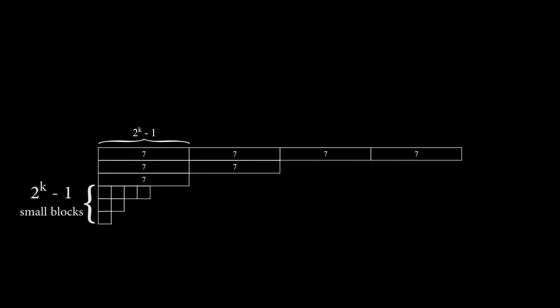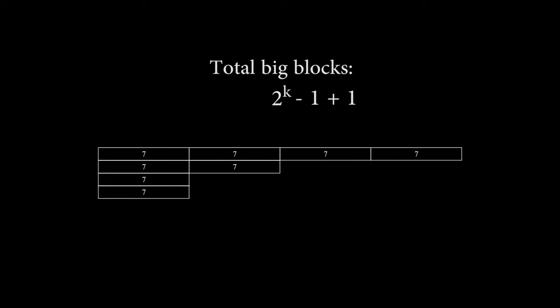So now, in addition to our 2 to the k big blocks, we can form one more from the little blocks. This puts our total big blocks at 2 to the k minus 1 plus 1, which is equal to just 2 to the k.